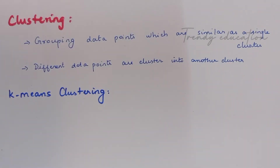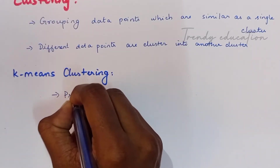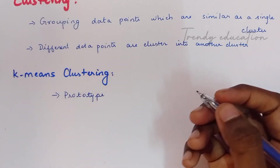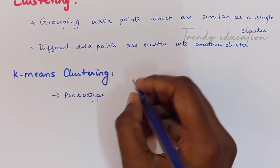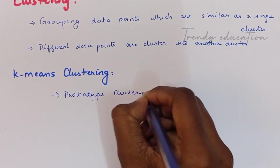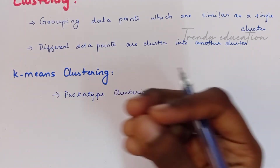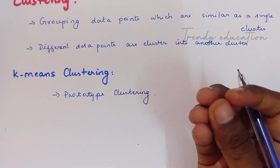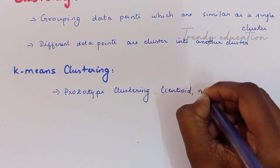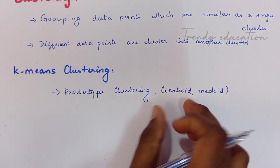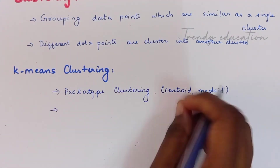Now let's see what is k-means clustering and how it works. K-means is a prototype-based clustering method — one of the most important ones. In prototype-based clustering, we use a centroid as the prototype, which acts as a sample. In k-means clustering, this centroid method is used to cluster the data points.